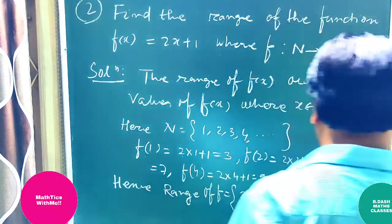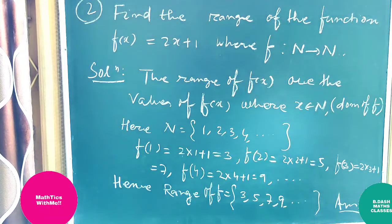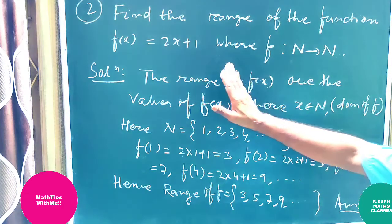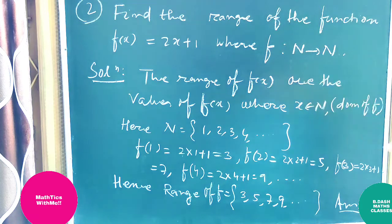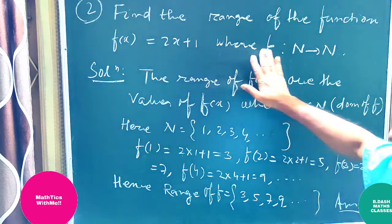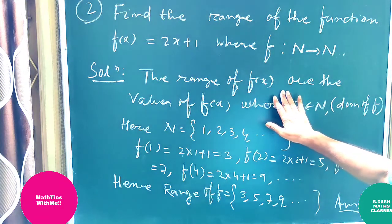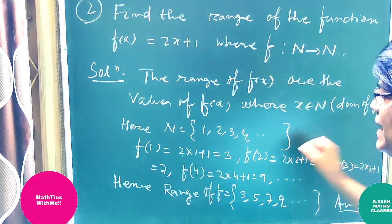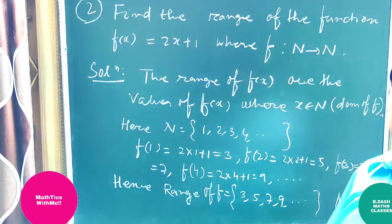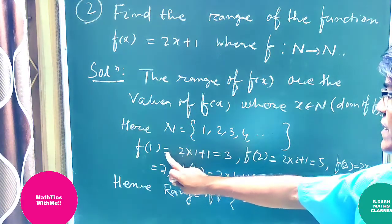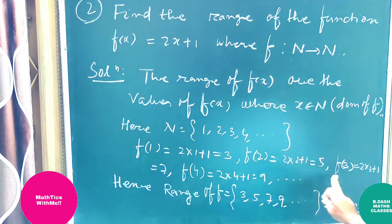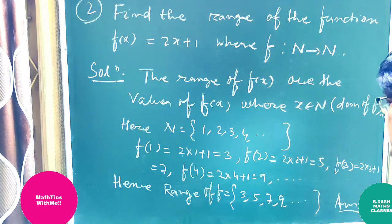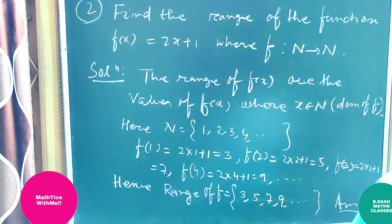The range of f(x) = 2x + 1 where f is a function from N to N: taking x = 1, 2, 3, 4, we get f values 3, 5, 7, 9 respectively. Therefore, the range of this function is {3, 5, 7, 9, ...} — the set of odd natural numbers starting from 3. Let us proceed to the next problem.